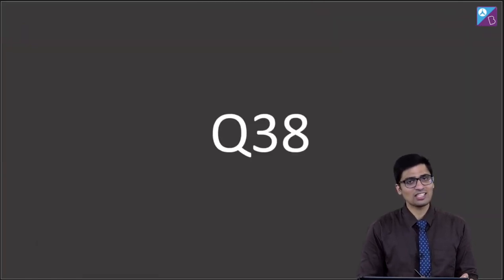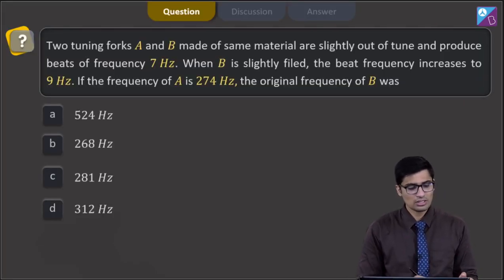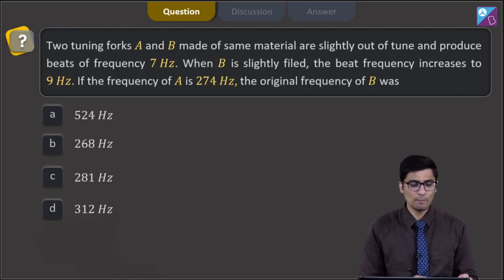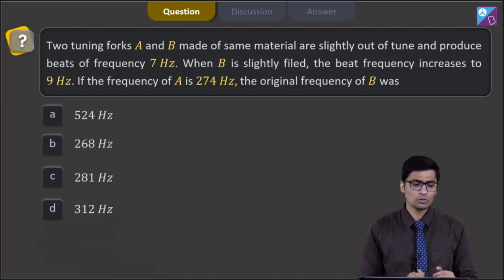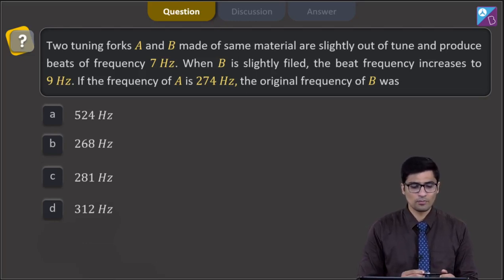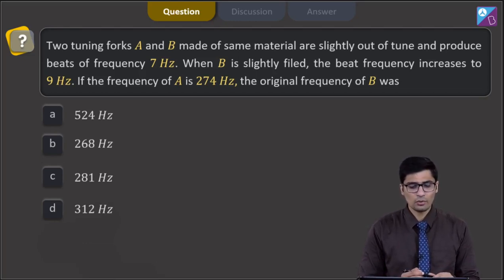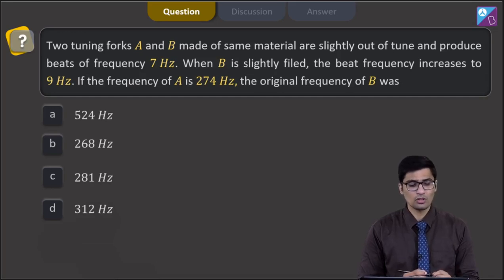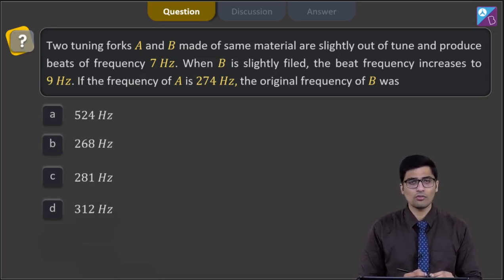Question 38. Two tuning forks A and B made of the same material are slightly out of tune and produce beats of frequency 7 Hz. When B is slightly filed, the beat frequency increases to 9 Hz. If the frequency of A is 274 Hz, then the original frequency of B was?